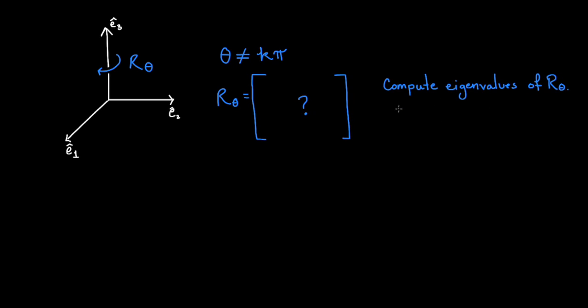Now let's consider a rotation by some angle theta that is not an integer multiple of pi clockwise about the z-axis. Write a matrix that represents such a rotation. Compute the eigenvalues of this matrix and use the definition of an eigenvector to explain why this makes sense. Pause the video.